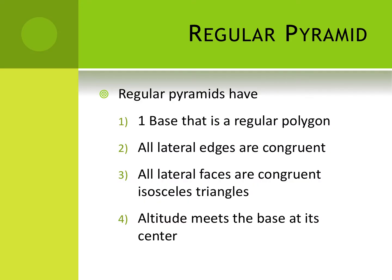When we refer to a regular pyramid, regular pyramids have one base that's a regular polygon. If it has four sides it's a square pyramid; if the base is a triangle it'll be an equilateral triangle. The lateral edges are all congruent, the lateral faces are congruent isosceles triangles, and the altitude meets the base at its center, which I'll show on the next slide.